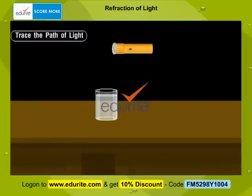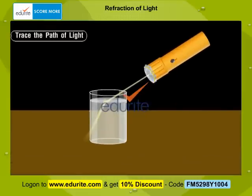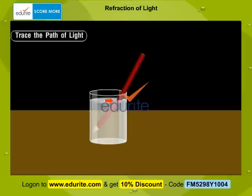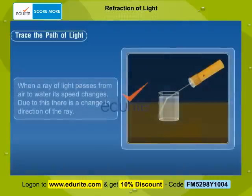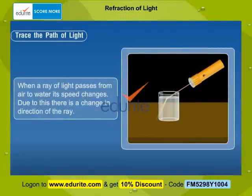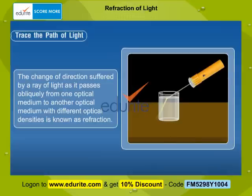Darken the room. Shine the ray of light from the torch to the bottom of the glass. Observe the path of the ray of light — the path is crooked. This shows that a ray of light changes its direction of propagation as it travels from air to water. When a ray of light passes from air to water, its speed changes, and due to this there is a change in direction of the ray. This change of direction suffered by a ray of light as it passes obliquely from one optical medium to another optical medium with different optical densities is known as refraction.